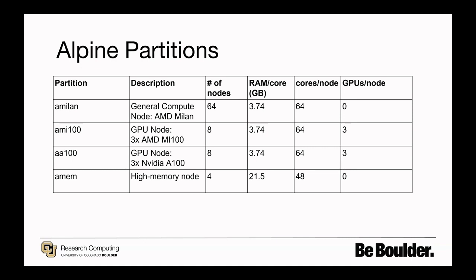Alpine has four partitions available to users for standard batch jobs: Amelon, a CPU-only partition; AMI100, an AMD GPU partition; AA100, an NVIDIA GPU partition; and AMEM, a high-memory partition. Depending on your needs, you will need to choose the correct partition for your job. You can find more information about our partitions in our documentation.